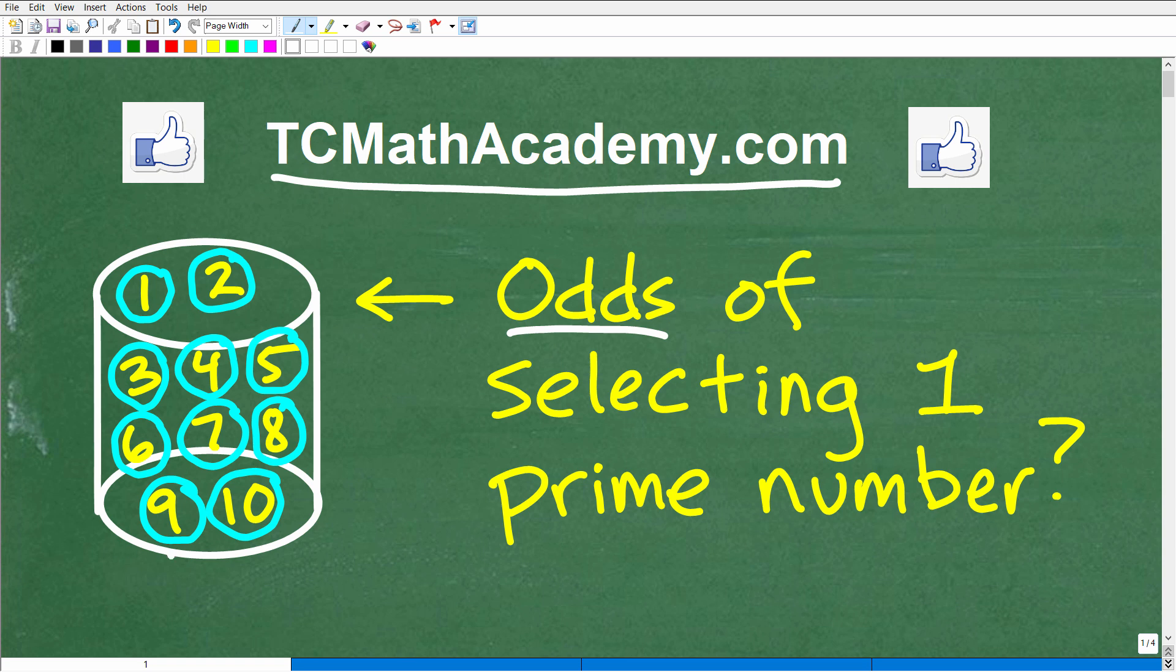Here we have a jar, and inside this jar there are 10 little balls labeled between 1 to 10. We've got 1, 2, 3, 4, 5, 6, 7, 8, 9, 10. And the question is, what is the odds of selecting one prime number?